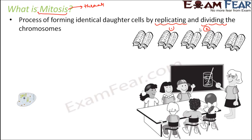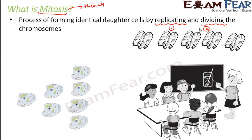If this is your parent cell, it will form two daughter cells which are identical to the parent cell as well as to each other. Each of them will form more daughter cells which will be identical to each other and also identical to the parent cell. That is the process of mitosis.